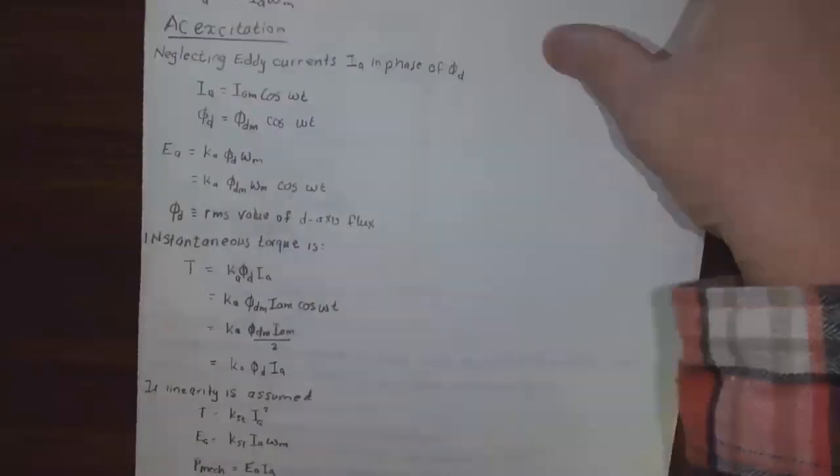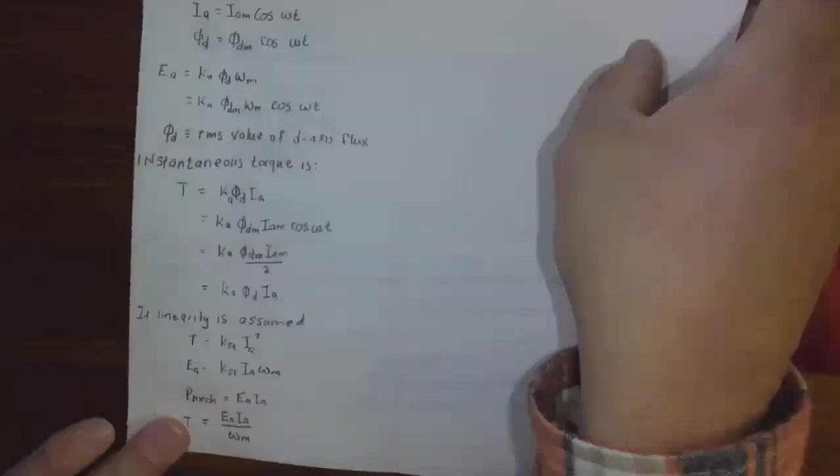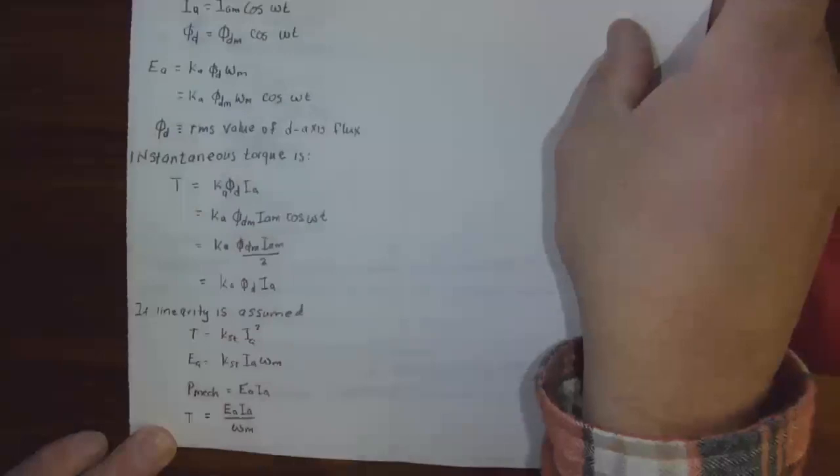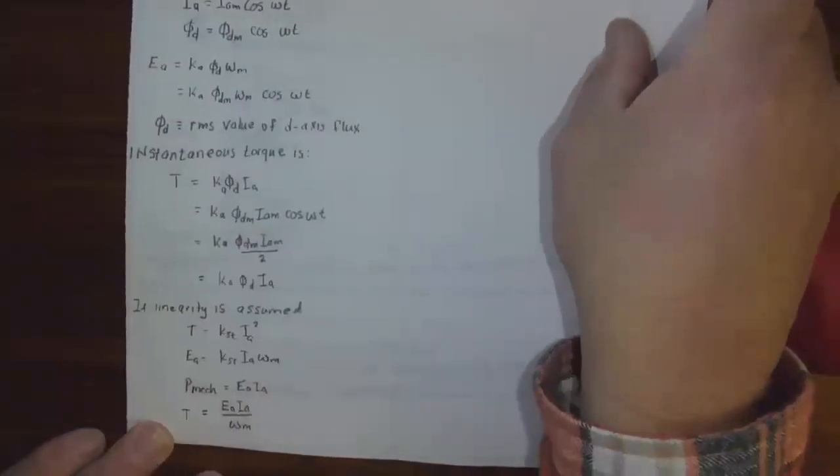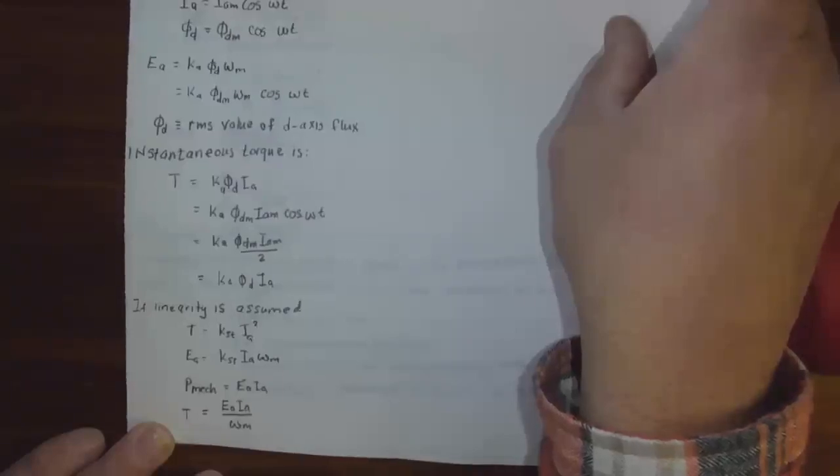Now if linearity is assumed, T is k I_a squared, E_a is k I_a omega m, and P mechanical is EI, and torque is EI over omega m.